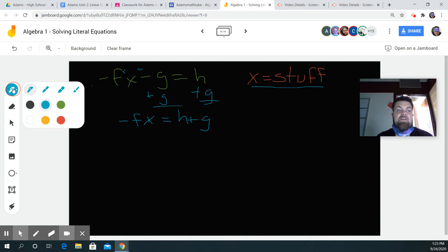Now I want to get the negative f away from x. What is negative f doing to x? It's multiplying. So to get rid of it, what do I got to do?